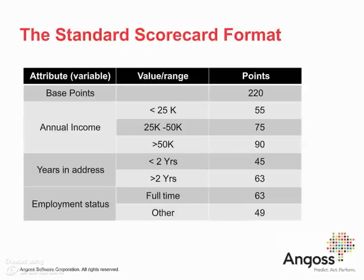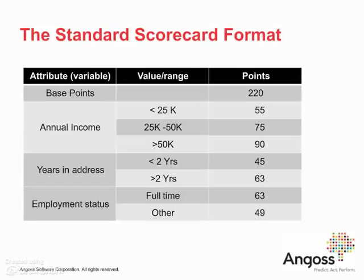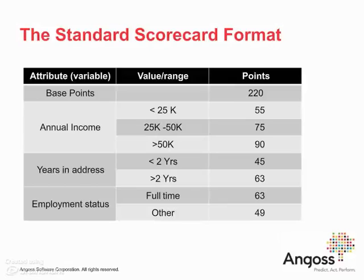Scorecards are usually presented in a tabular form — this is known as the standard scorecard format. It assigns base points to start with, so every account gets, for example, 220 points. Then, depending on the values of specific characteristics, predictors, or variables, certain points are assigned. Each characteristic is divided into ranges or values — for example, annual income: less than 25K, 25K to 50K, 50K and above, and so on. The total score for each account is simply the sum of the points assigned for that specific account.